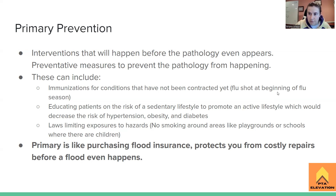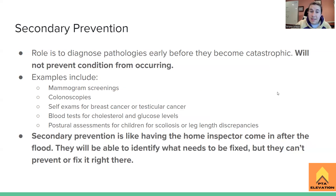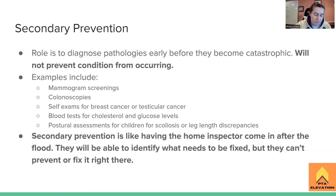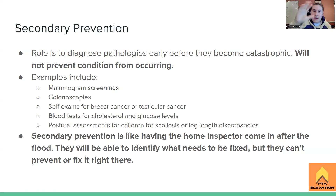Secondary prevention's role is to help diagnose pathologies before they become catastrophic. Secondary prevention is not going to stop the condition from happening — the condition is already existing. Primary prevention is the only one that can truly prevent the condition from happening. Secondary prevention is like: okay, something happened — let's try to keep it from becoming the worst-case scenario, like death. The pathology is present. Now what do we do?